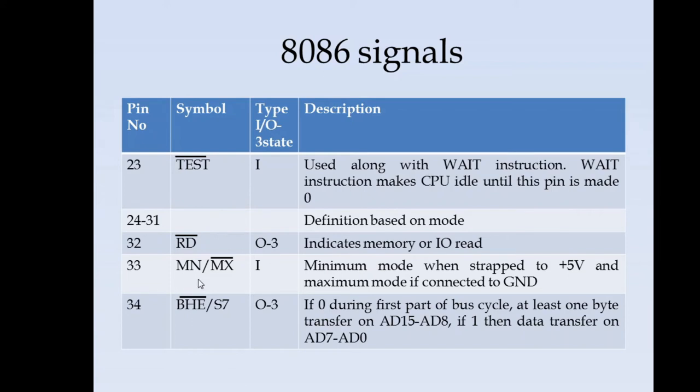Pin 33 is the mode pin, minimum or maximum mode. M max is active low. If it is going to be minimum mode this pin should be strapped to 5 volts. If it is going to be maximum mode or multiprocessor configuration this pin should be connected to ground.